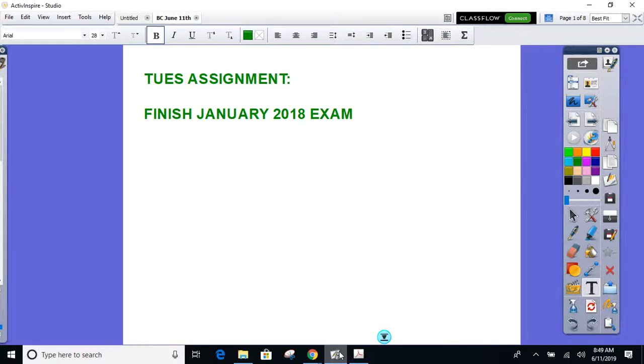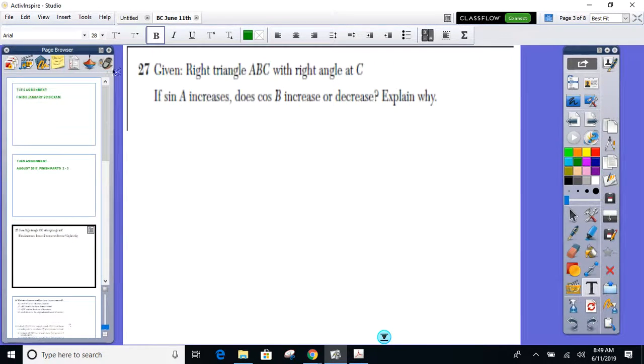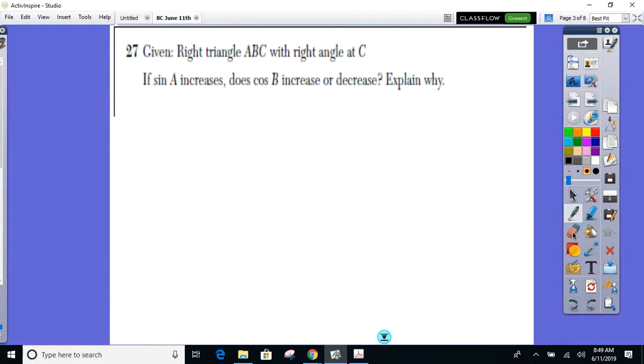Problems 2 and 3, January 2018 I suggested last night. Maggie, 27 I already had it prepared. I figured that would be one. If not, I was going to do it with you anyway. 27, we had a right triangle ABC where the right angle was at C.